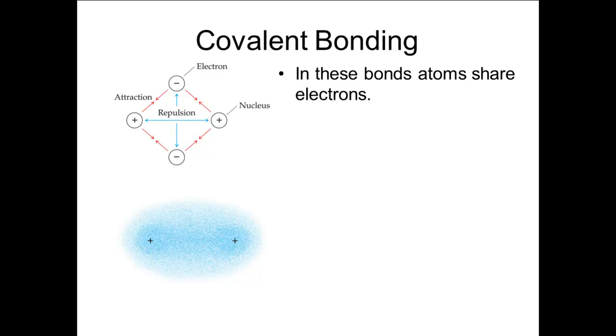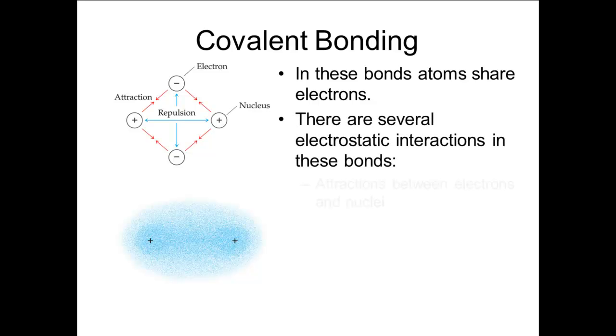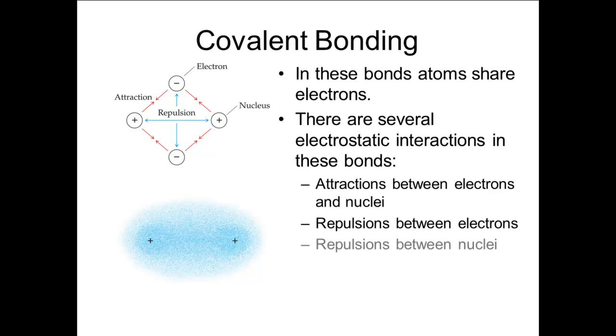For covalent bonding, both atoms involved attract the electrons very strongly, so no transfer can occur. Instead, the atoms share the electrons in order to fill their shells. If we look at the simplest molecule, H2, we have four particles present. Each electron is attracted to both protons. The two electrons repel each other, as do the two protons. So we have four attractions and two repulsions we need to deal with in the molecule.